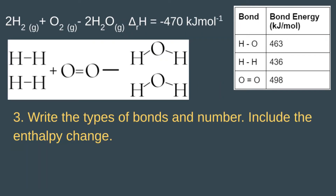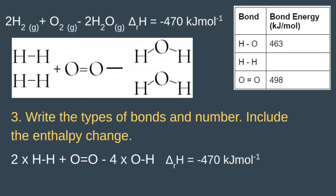Our third step is to write out the types of bonds and how many there are, and include the enthalpy change. For this reaction, each hydrogen molecule has one H-H bond, but because there are two molecules, we have two times H-H bonds, and one O=O double bond.